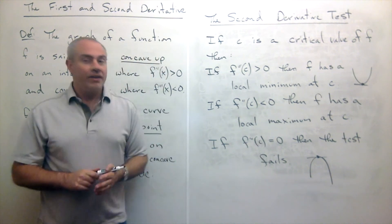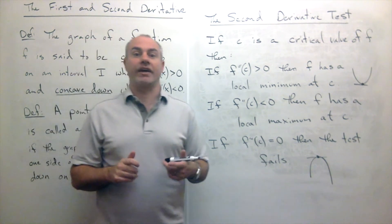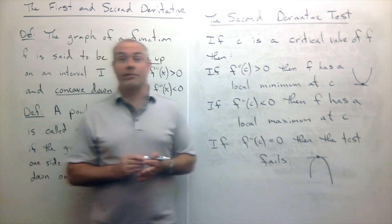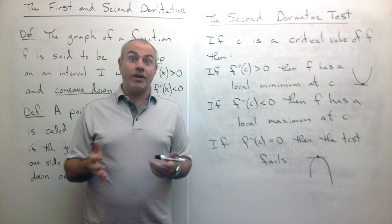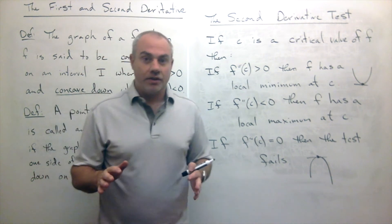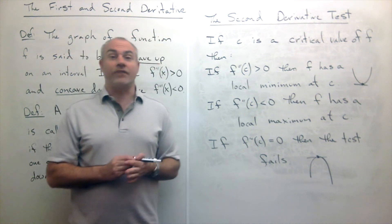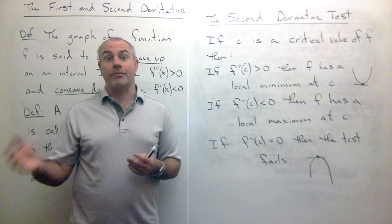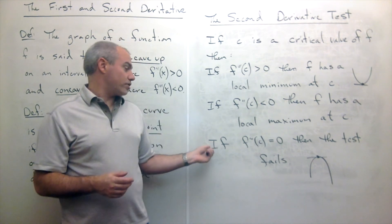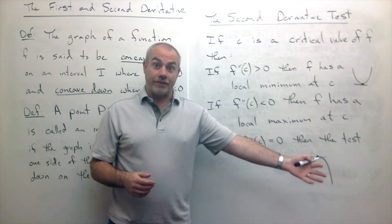If the concavity is zero, then the test fails. That doesn't mean it's nothing — it means I can't tell if it's a max or a min, and I need to use some other method to figure it out. Typically, if the second derivative test fails, you go back and use the First Derivative Test instead.